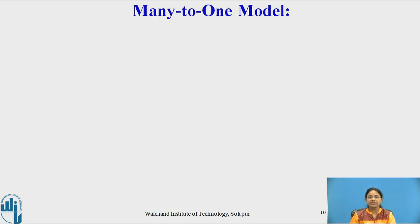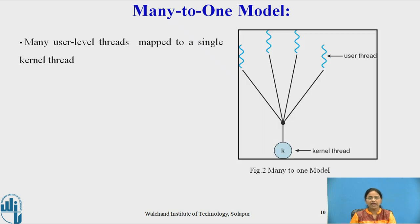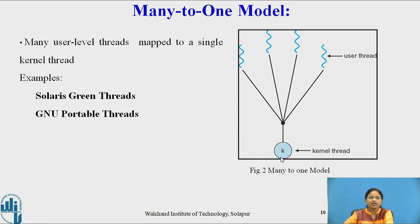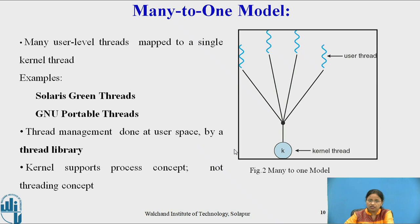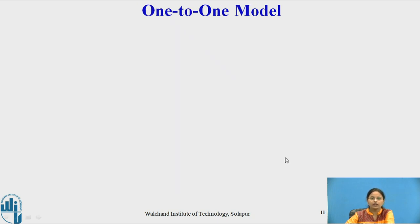The first model is the many-to-one model. In this model, many user level threads are mapped to a single kernel level thread. As shown in this figure, many user level threads are mapped to one kernel level thread. This type of threading is used in Solaris Green Threads or GNU Portable Threads. All user threads are created in user space using the thread library, so thread management is done at user space. The kernel supports only the process concept, not the threading concept. Only one user thread can use the kernel thread at a time.